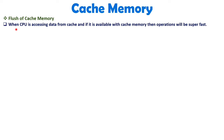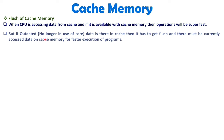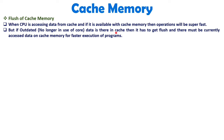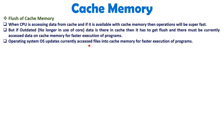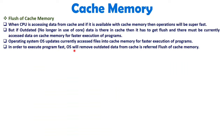An important terminology is the flush of cache memory. When CPU is accessing data from cache and it is available, operation is super fast. But if the data is outdated, it will not be useful in cache. In that case, you need to remove that data — that is called flushing. If you flush outdated data via the operating system, execution will be fast. But if outdated data remains in cache memory, program execution will be slower. To make execution fast, the operating system will flush outdated data and update the currently accessed file into cache memory.